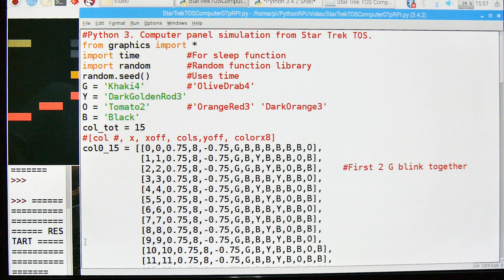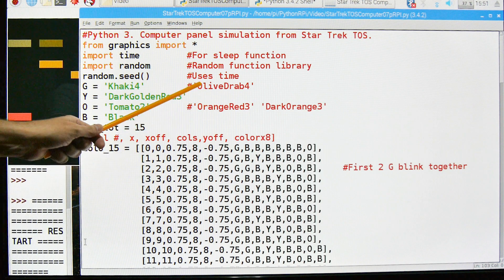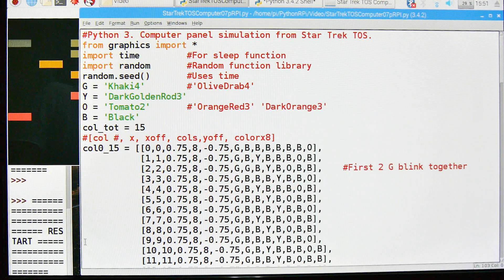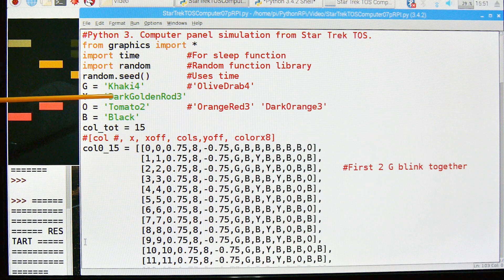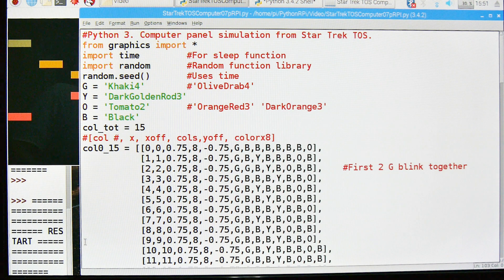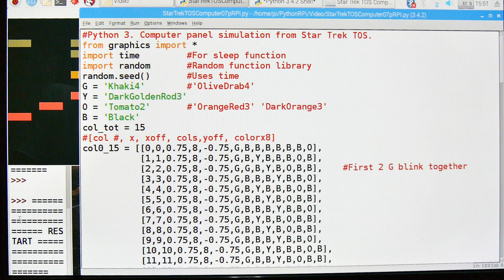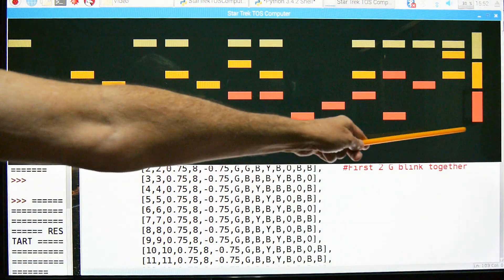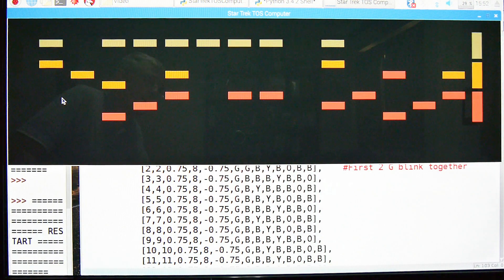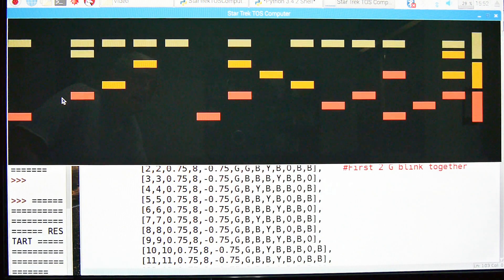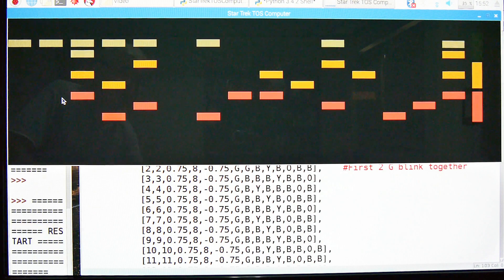Then we're going to do a random seed. I'm using two different types of random that are available with Pi. The G is khaki color, khaki 4. If you don't like these colors, all you have to do is change these, and you can see I was experimenting out here with different colors. You can change them to whatever fits your monitor or fits your eye. The yellow is dark goldenrod 3. The orange is tomato 2. And the B is just plain old black. This is just a variable I have for the total number of columns is 15.